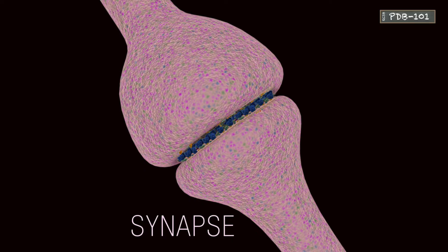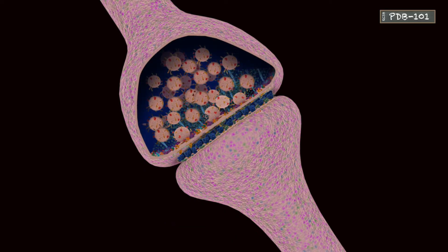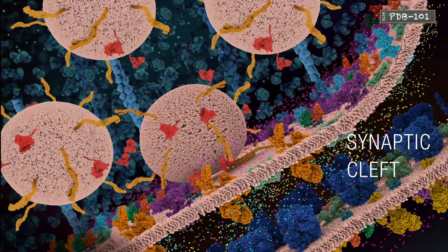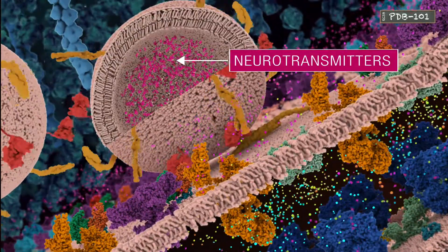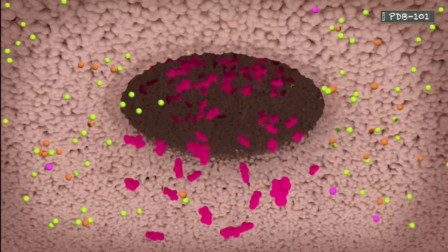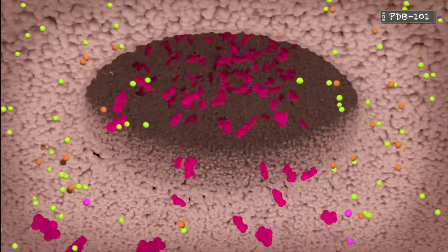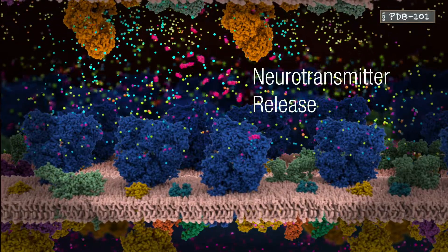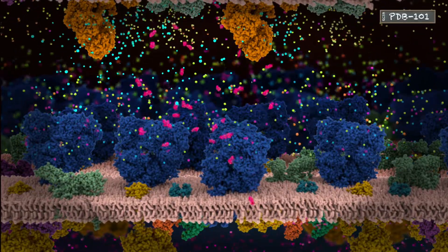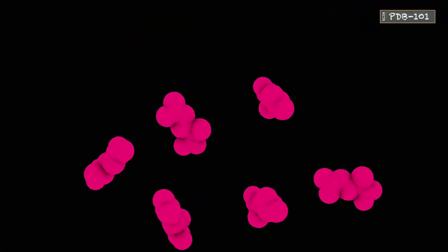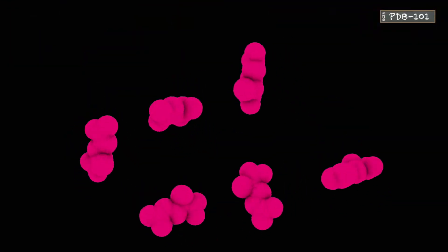One neuron releases neurotransmitters from storage vesicles into the synaptic cleft, a small gap separating the two neurons. There are many types of neurotransmitters that carry different types of signals.